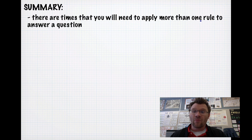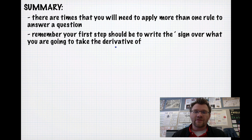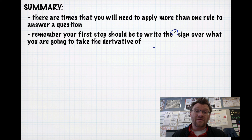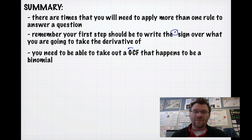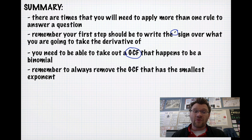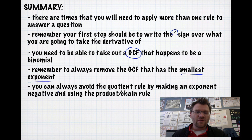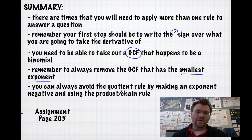In summary, there are times you'll need to apply more than one rule — the product rule, quotient rule, and chain rule — in the same question. Your first step should be to write the prime sign over what you're differentiating to keep your work organized. Remember to take out a GCF that's a binomial with the smallest exponent, including negative exponents. You can always avoid the quotient rule by making the exponent negative and using the product rule with the chain rule. Your assignment is on page 205. Good luck, and we'll see you in class.